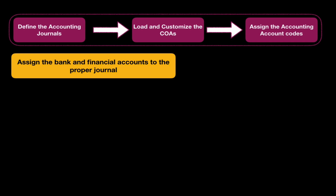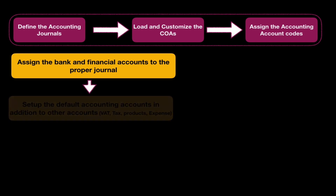After that, we will set up the default accounting accounts. As we saw in the accounting setup, we assign the default accounting account. As discussed in the previous lesson, these are the default accounts Dolibarr will use in case a product does not have an accounting account or a code assigned to it — Dolibarr will use this default account to log the transactions for that customer, product, or whatever applies.